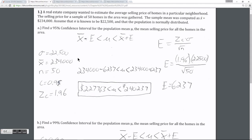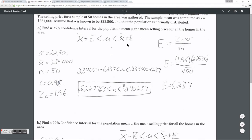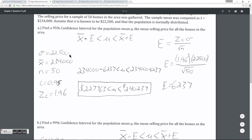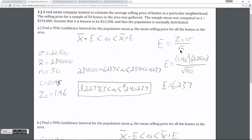The first part of the question asks us to find a 95% confidence interval for the population mean mu, which is the mean selling price for all the homes in the area, not just the 50 that we sampled. The generic formula is that the population mean will fall on an interval that is the sample mean plus or minus some margin of error. The factors we need are the sample mean — $234,000 — the z-critical value, the population standard deviation of $22,500, and the sample size of 50.